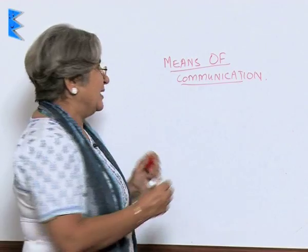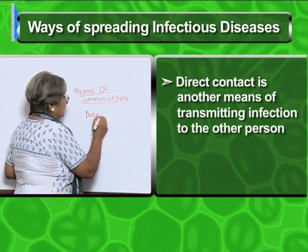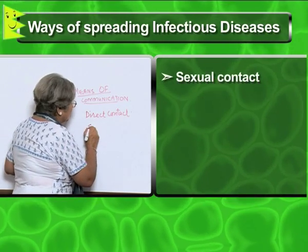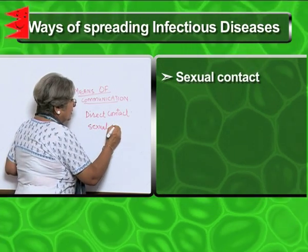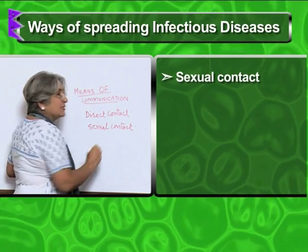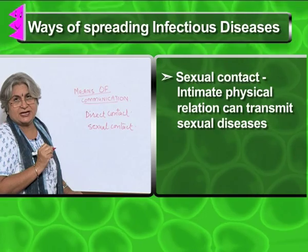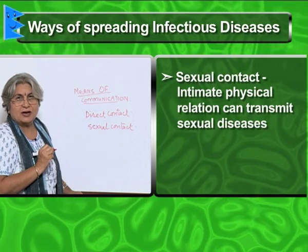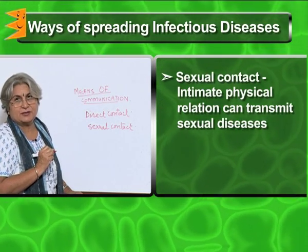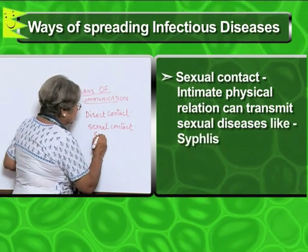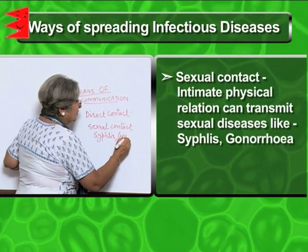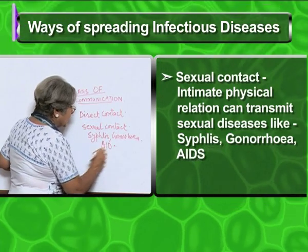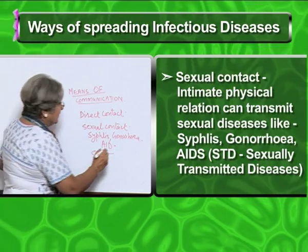Another means of spread is direct contact. Under direct contact will also come sexual contact. Sexual contact means the intimate physical relation — it does not mean just shaking hands, kissing, or hugging, but the intercourse. When there is sexual contact, the result is that there can be some sexually transmitted diseases like syphilis, gonorrhea, or even AIDS. These are called STDs, or sexually transmitted diseases.